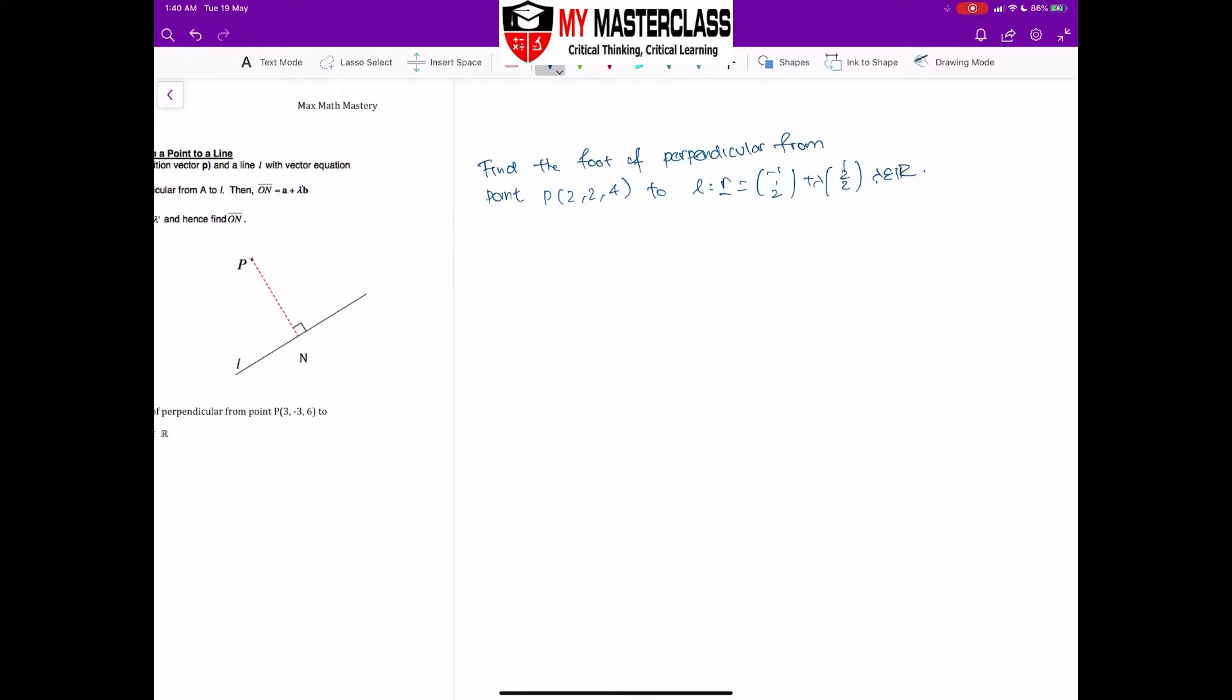The question wants me to find the foot of perpendicular from point P to a line direction (-1, 1, 2) plus lambda (1, 2, 2). So if I quickly draw a diagram, now in vectors, remember, it always helps if you quickly draw out the diagram itself. So point P, which is (2, 2, 4), and this is my line.